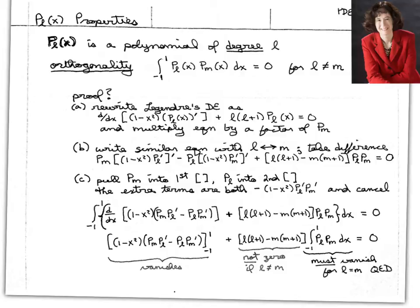Now in class we derived the Legendre functions and we talked about some of their properties. We mentioned that a Legendre function PL of X is a polynomial in X of degree L. We also said in class that if you have two different Legendre functions PL and PM where L and M are different values, then if you multiply the two Legendre functions together and you integrate the product over X on its full range from negative 1 to 1, the result is 0. And we said that this is the sense in which two different Legendre functions PL and PM are orthogonal to one another.